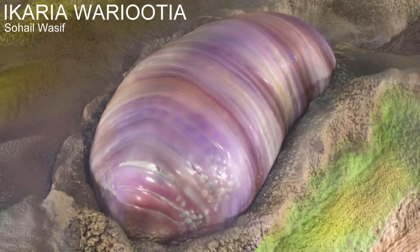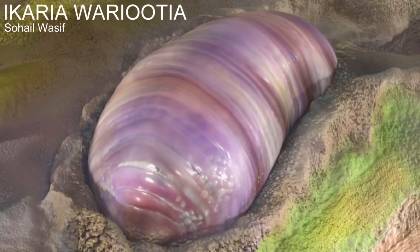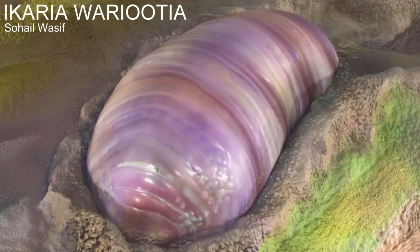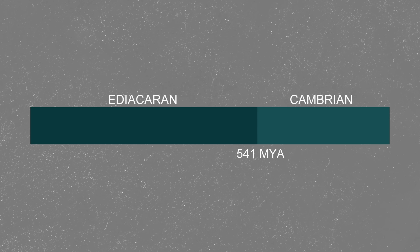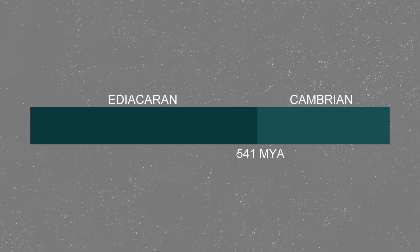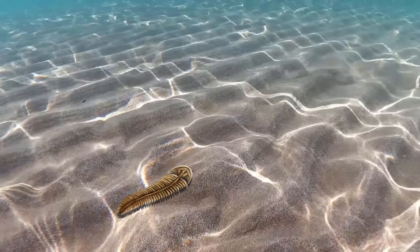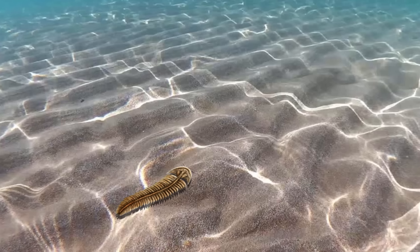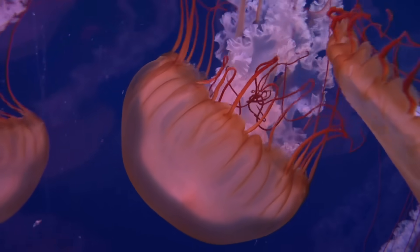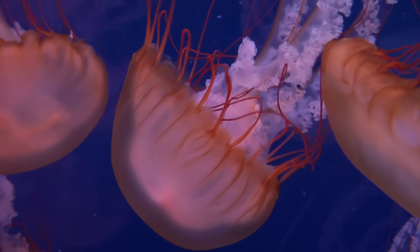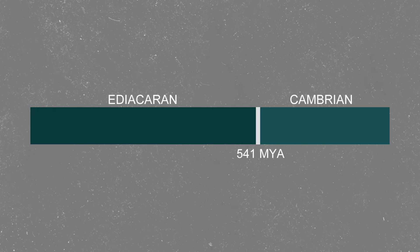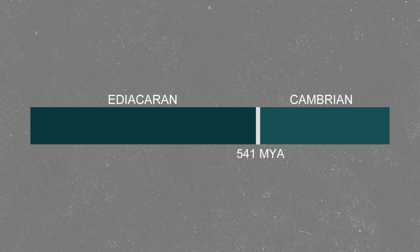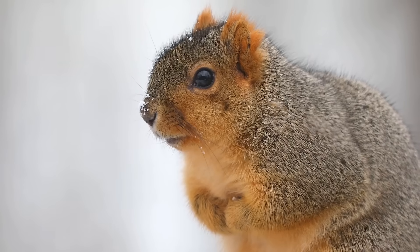There was also a small worm-like animal called Icaria wariutia, about the size of a grain of rice, that burrowed into the sands of this ancient Australian seabed. So by the Ediacaran, bilateral animals had evolved, but they were fairly obscure and were outnumbered by animals with either radial symmetry or other forms of symmetry. But during the Cambrian explosion, the bilatrians became much more successful, with many new forms starting to appear, and today they are by far the most common type of animal.